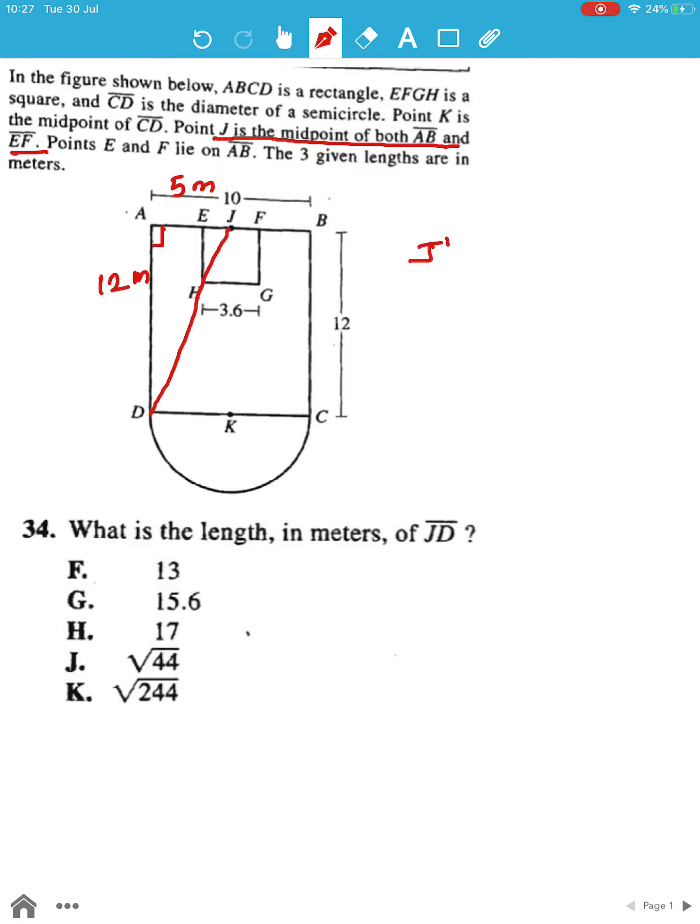And now we have to find out JD. So we will use Pythagoras here and we have JD the whole square is equal to 12 square plus 5 square.